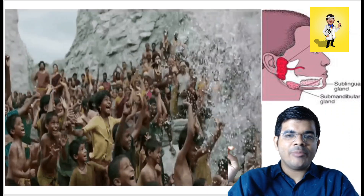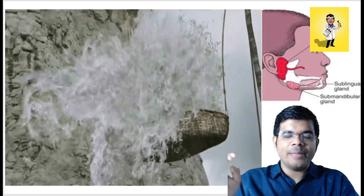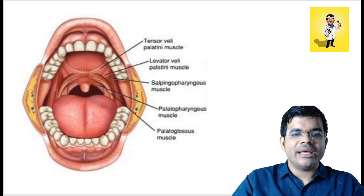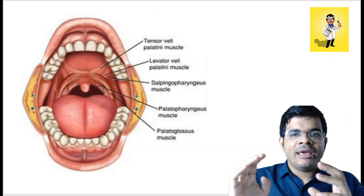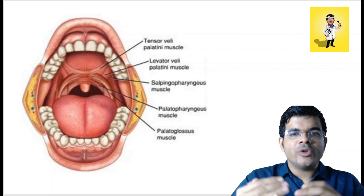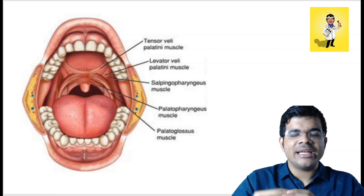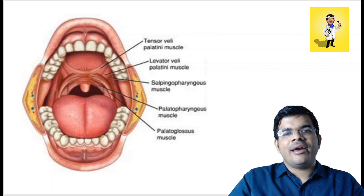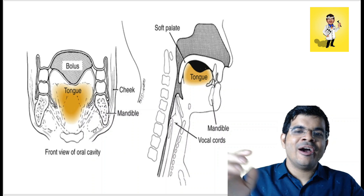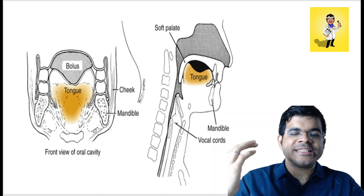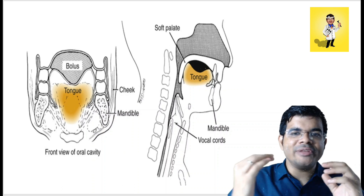The food is then made into a cohesive bolus with the help of saliva secreted from the parotid glands as well as the submandibular and sublingual glands. After lubrication, the cohesive bolus has to move posteriorly. In the oral preparatory phase, the bolus is retained within the oral cavity — the palatoglossus and palatopharyngeus muscles are in a contracted state and the passage into the oropharynx is cut off. The tongue base is approximated with the soft palate and the bolus is compressed against the hard palate.